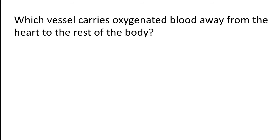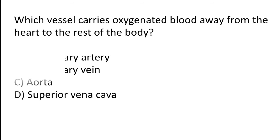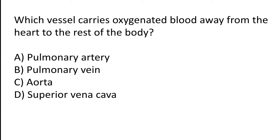Which vessel carries oxygenated blood away from the heart to the rest of the body? (a) Pulmonary artery, (b) pulmonary vein, (c) aorta, (d) superior vena cava. The correct answer is option C. The aorta carries oxygenated blood away from the heart to the rest of the body.